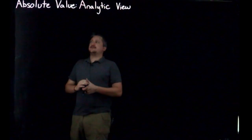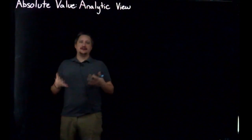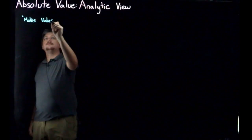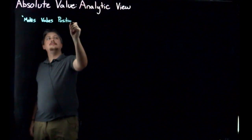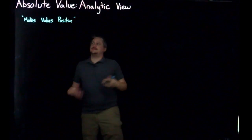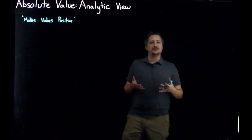As we mentioned in the last video about the geometric understanding, and as you've probably heard before, one of the interpretations of the absolute value is that it makes values positive. The question is how do you represent this analytically? How do you do this with algebra?